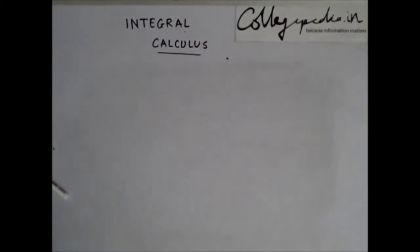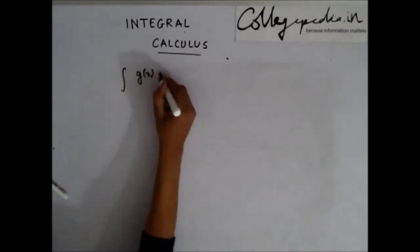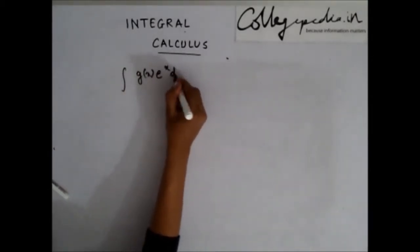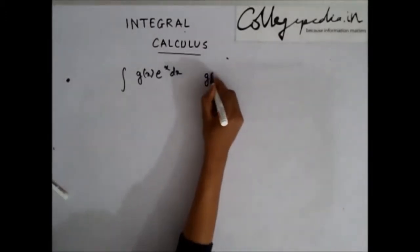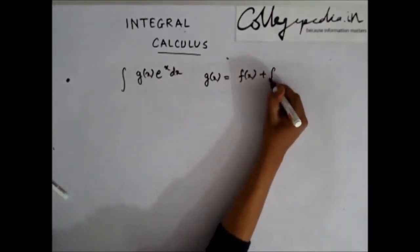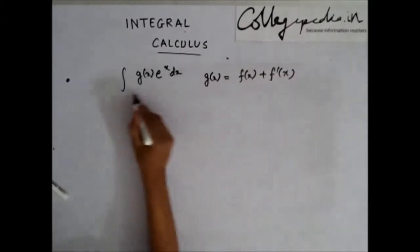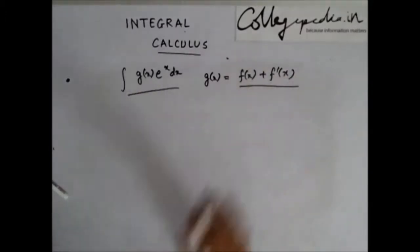Next, we will try to derive a conclusion. The conclusion is, if I have been asked to integrate g(x)e^x dx, where g(x) I can represent in the form of f(x) plus f'(x), let's say I have been asked to integrate this, where g(x) can be represented in this form.